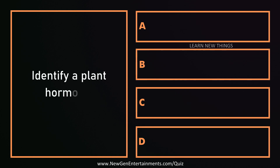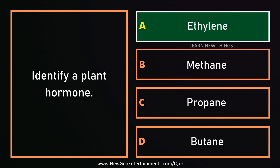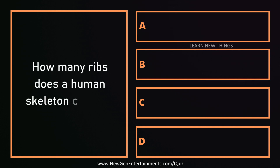Identify a plant hormone. Ethylene. How many ribs does a human skeleton contain? 24.